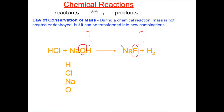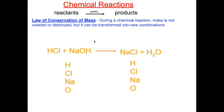The elements present at the start of the reaction must still be there at the end of the reaction. The correct product is NaCl and H2O. Notice the number of atoms in each element is the same. In the reactants, we have two hydrogens, one chlorine, one sodium, and one oxygen.